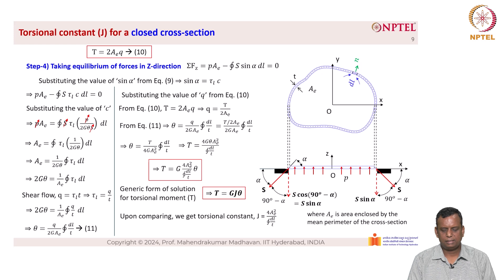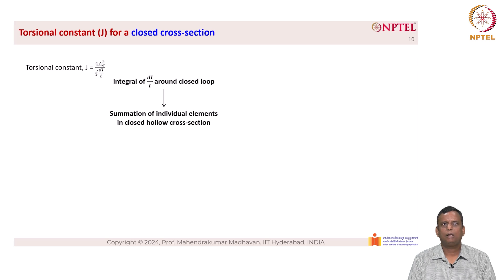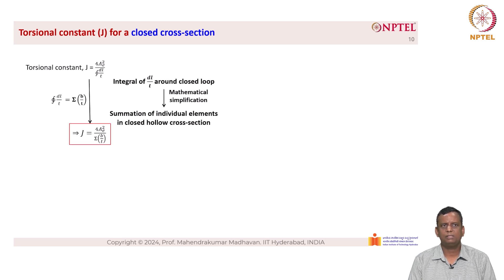This is of the form T = GJθ. Comparing, the torsional constant is J = 4A_e²/∮(dL/T). The integral ∮(dL/T) is around the closed loop, meaning it must be integrated around the closed perimeter. For practical computation, it can be broken down as a summation of individual elements: ∮(dL/T) = Σ(b/T), so J = 4A_e²/Σ(b/T).